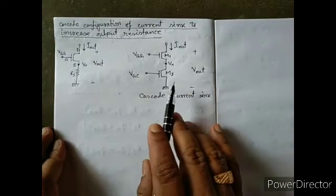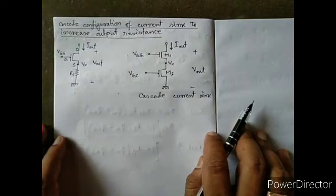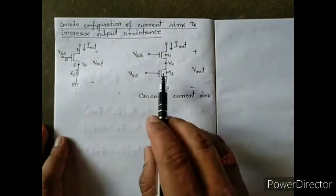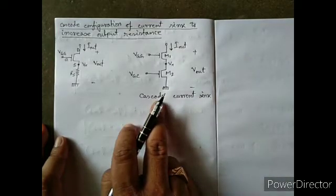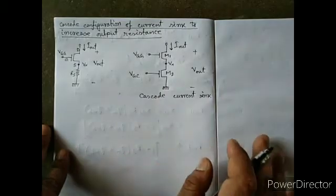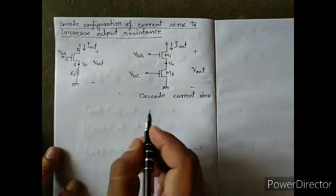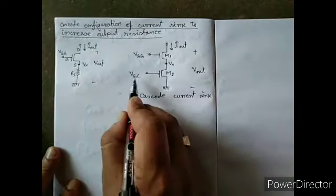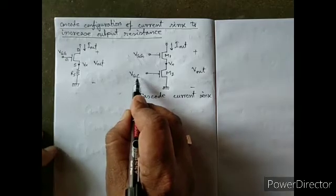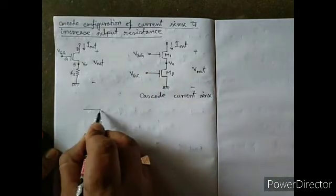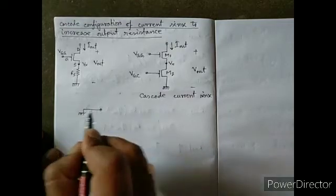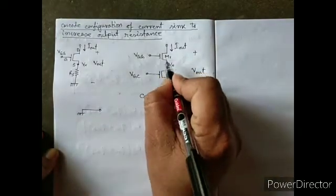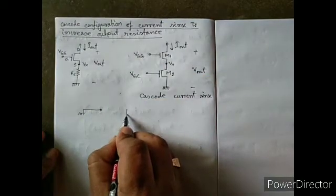Now if we want to see how the output resistance is increasing, we have to analyze the equivalent circuit. If we draw the equivalent circuit, then VGG will be connected to ground, and the common gate VGC should also be connected to ground. This M1 transistor can be replaced with a dependent current source.